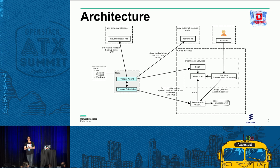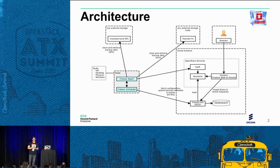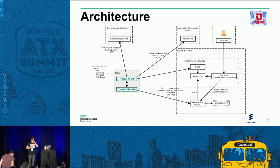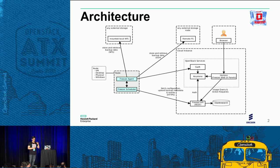The scheduler retrieves information from the API, writes back metrics and information to the API, and executes the Freezer agent accordingly. It provides scheduling features and also a kind of orchestration and dependencies on multiple tasks belonging to the same job, so it can execute multiple actions.